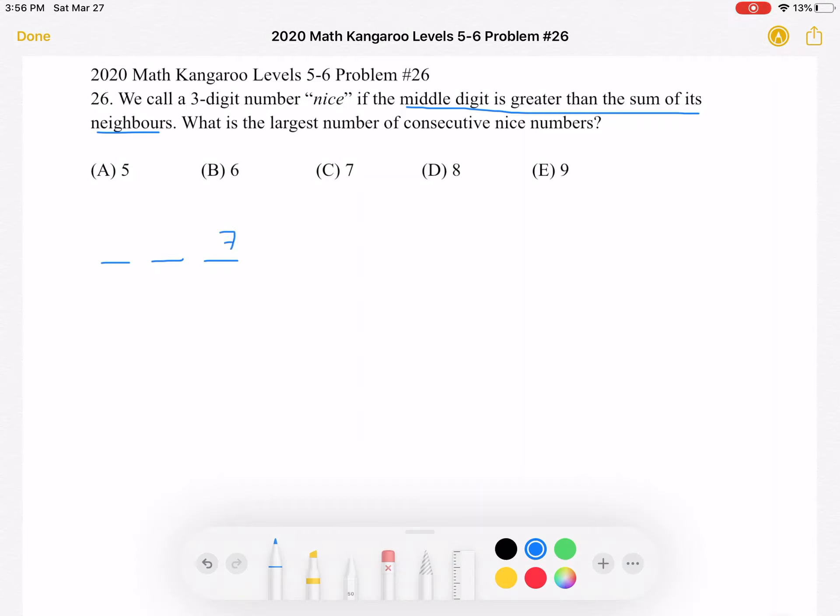What about 7? Well, we can have 7 because the greatest possible middle is 9, and if we have 1 in the hundreds place, our middle digit is greater than the sum of its neighbors, 1 plus 7, which is 8. So the greatest possible ones digit is 7.